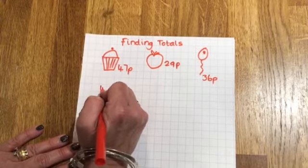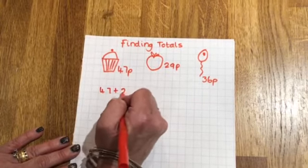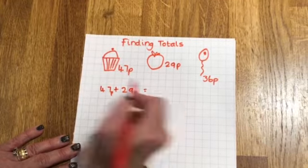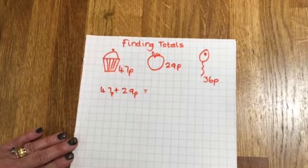So 47 add 29. I've got the p in because it reminds me it's pennies. Now there's a couple of ways I could do this.